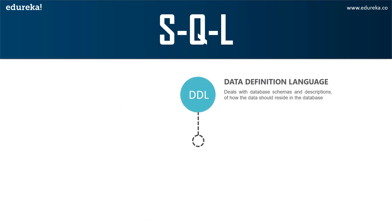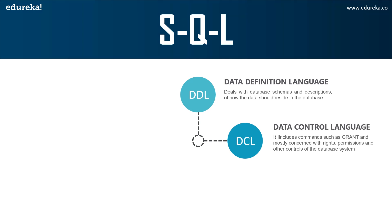The different subsets of SQL commands are as follows. DDL, that is Data Definition Language, deals with the description of the database schema and is used to create and modify the structure of database objects. It allows you to perform operations such as create, alter, and delete objects. DDL is very popular and extensively used. Moving on, DCL, that is Data Control Language, allows you to control access to the database — granting or revoking user access privileges using the GRANT command.